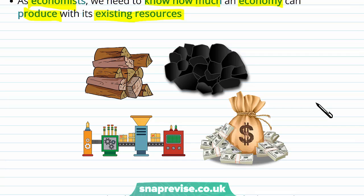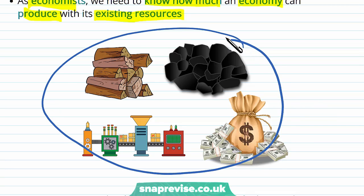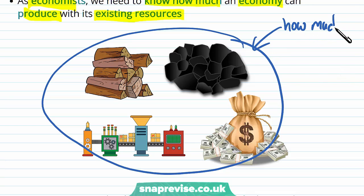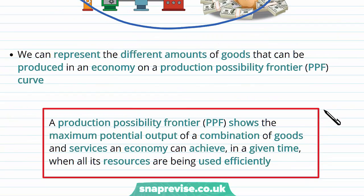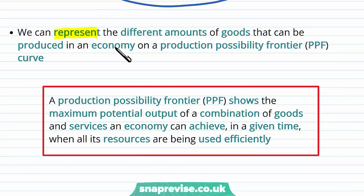So let's say that we have an economy with a selection of limited resources — this is all the resources we have — and using these resources we want to know how much our economy can produce. It's part of the first step to working out how to allocate resources. Economists visualize how many goods are available in an economy by representing different amounts of goods on a production possibility frontier, or PPF curve.